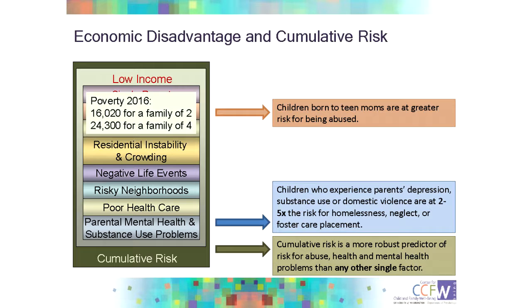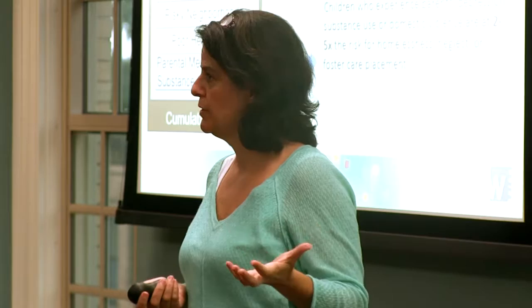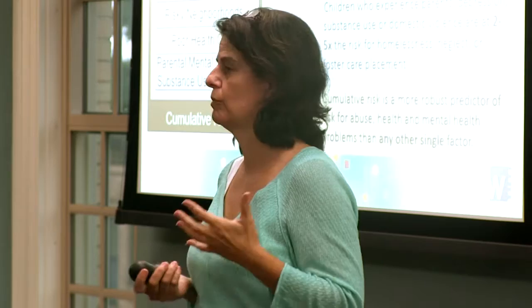We could study any one of these factors — and in fact people argue it's important to understand the individual effects of each risk factor, and I completely agree. Understanding the effects of neighborhood risk or maternal depression is really important. But understanding that these rarely occur in isolation, and that any one of them is associated with a burden of overwhelming risk, is equally important. Cumulative risk is a more robust predictor of risk for abuse than things like attachment status. Having a teen parent is associated with greater risk for abuse; having a parent with mental health or substance use problems is associated with higher rates of kids in foster care or homelessness.